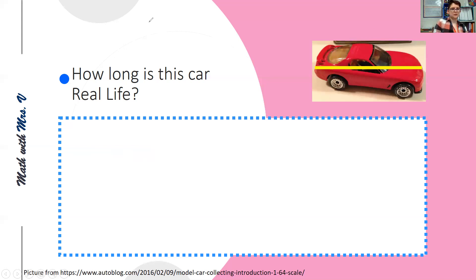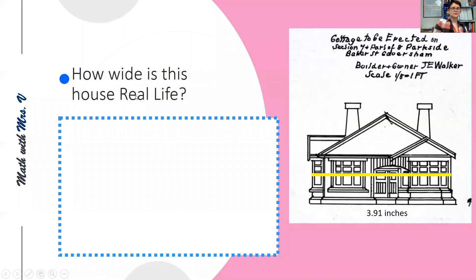Let's look at another example. Now this is an old drawing of a house. It was built, it was planned to be built in 1913. And we can see that the designer, whoever drew this, wanted a 1/8th inch to 1 foot scale. Now we can switch between different measurements. That's what scales allow us to do. So 1/8th of an inch to 1 foot.